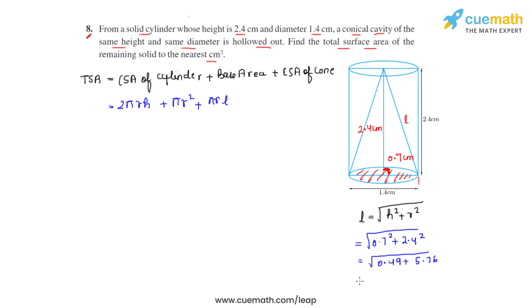That will give us √6.25, so basically the slant height l equals 2.5 centimeters. Now we can substitute all the values back into the formula that we have to calculate the total surface area of the remaining solid.